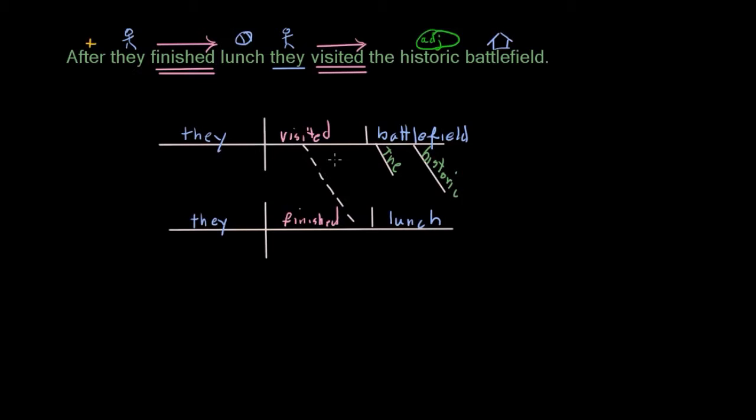And finally, our subordinating conjunction, which is the first word in the sentence, so we'll capitalize it: 'After.' Let's try another one: 'As long as they continue to practice, our team will continue to win.' We have two clauses here. One is subordinate — the first one — because it has the three-word subordinating conjunction 'as long as': 'As long as they continue to practice.' Our independent clause is 'our team will continue to win,' which could stand by itself as a sentence. The subordinate clause could not.